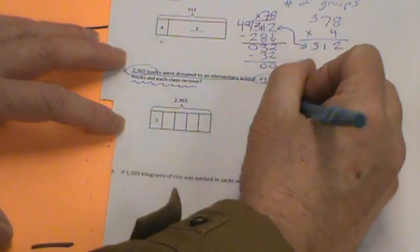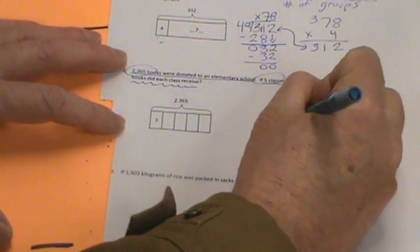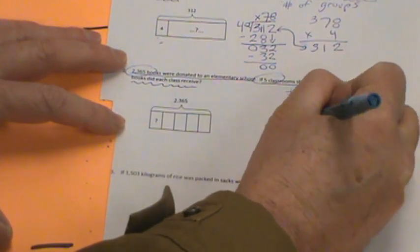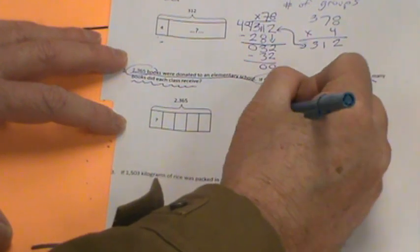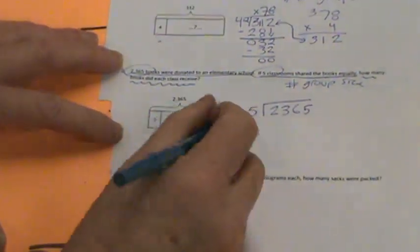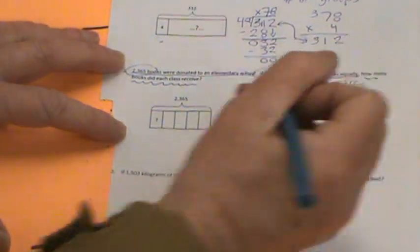Let's go ahead and give this the best shot. 2,365 is our whole. It's being divided. Our divisor is 5. 2 can't be divided by 5, it's 2,000. We're just going to put a x up there. So now we're stuck with 23. We all know how to count by 5s by now. 5, 10, 15, 20. Looks like it's 4.